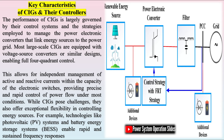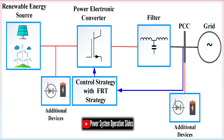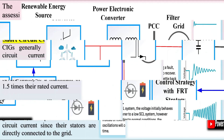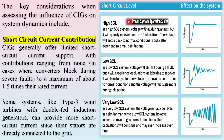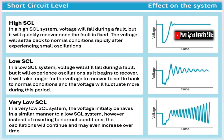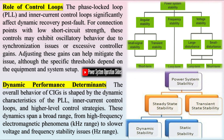Considering the operational timescales of CIGs, it is essential to extend the scope of analysis to include faster electromagnetic dynamics when these significantly affect overall system behavior. This approach focuses on two primary timescales: electromagnetic and electromechanical. Electromechanical phenomena are further divided into short-term and long-term dynamics, commonly analyzed using phasor-based approximations. However, such models are not suitable for representing electromagnetic phenomena, which require different analytical methods. This discussion emphasizes the classification and definition of power system stability phenomena, factoring in the increasing role of CIGs in bulk power systems.